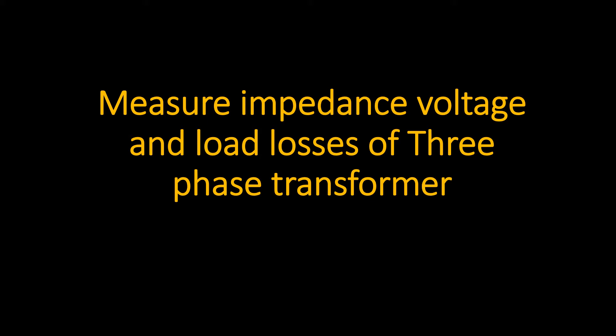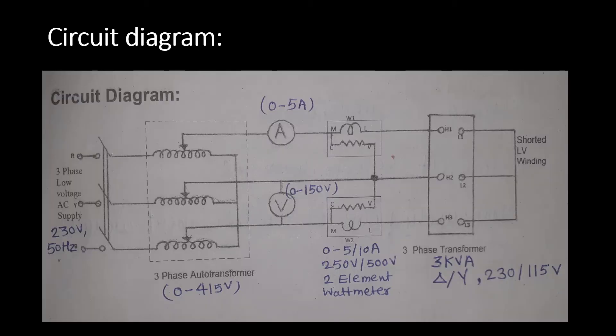We will measure impedance voltage and load losses of a three-phase transformer. Make the connections as per this circuit diagram. We are considering a two-element watt meter. The transformer under test is 3 kVA, delta-star connected — primary is in delta and secondary is in star. Primary voltage is 230 volts whereas secondary voltage is 115 volts.